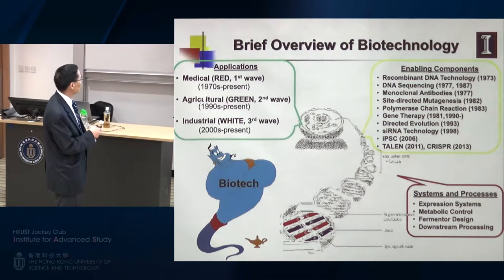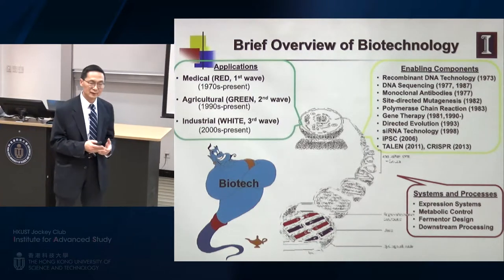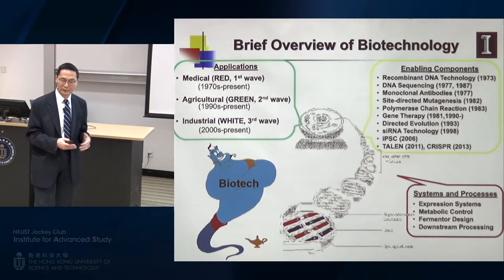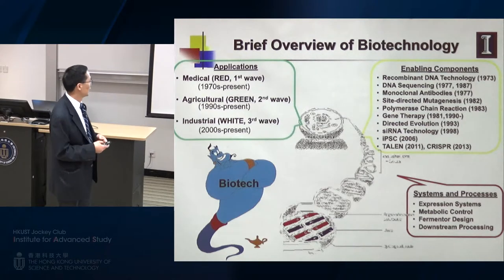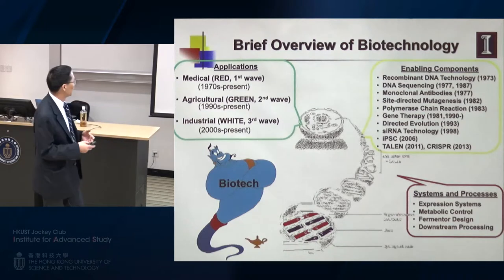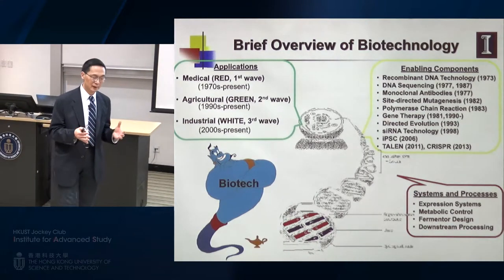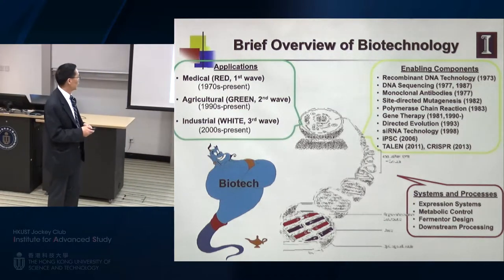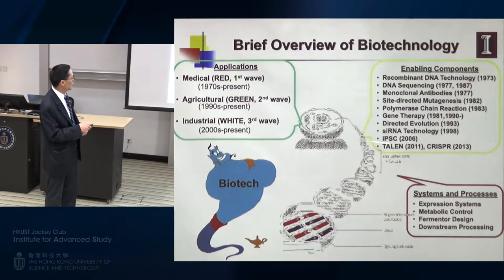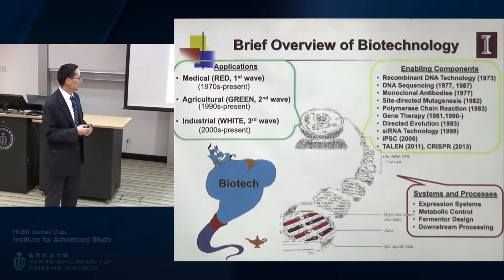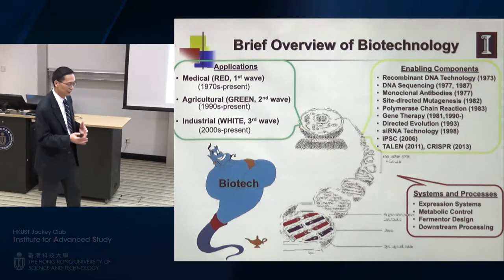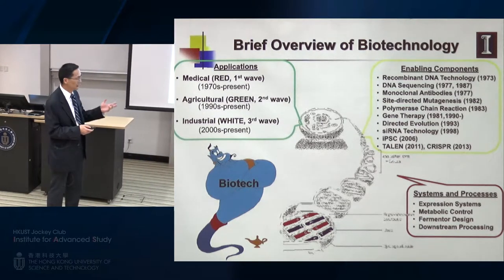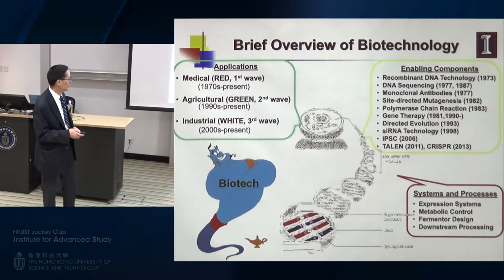Biotechnology was initially applied to the medical area — the first wave, or red biotechnology. In the 90s, biotech was applied to agriculture — the second wave. In the 2000s, biotech was applied to the industrial sector, mainly chemical and energy companies. In order to make biotech a reality, we also have to consider downstream processing — purification, reactor design — where chemical engineers play a very important role.